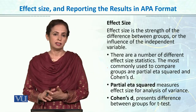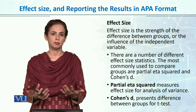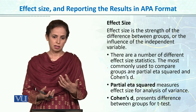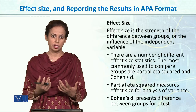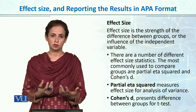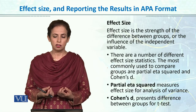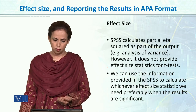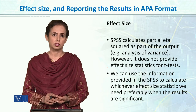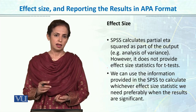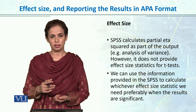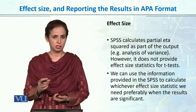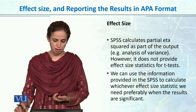But for the t-test — specifically the independent samples t-test — we use Cohen's D. Cohen's D tells us what the strength or magnitude of the difference is between the two groups. However, Cohen's D is not directly calculated in SPSS; for that, a calculator is provided. If you go online and search for a Cohen's D calculator, you will find one, and by entering some information into it, it can give us the effect size.